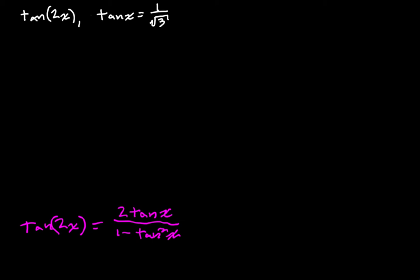So what do we have? We have that the tangent of x is equal to one over square root of three. So I made this example pretty easy because I wanted to kind of drive a point home here. We have the tangent of x is one over square root of three, so we should just be able to plug this in.